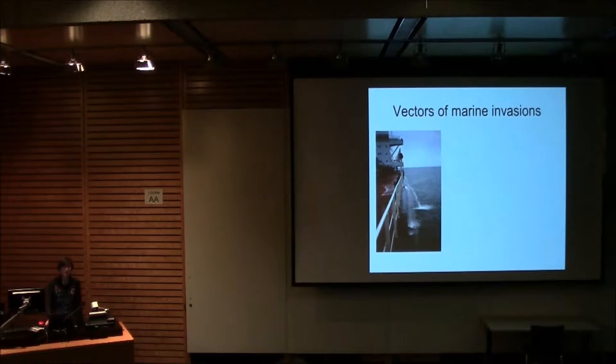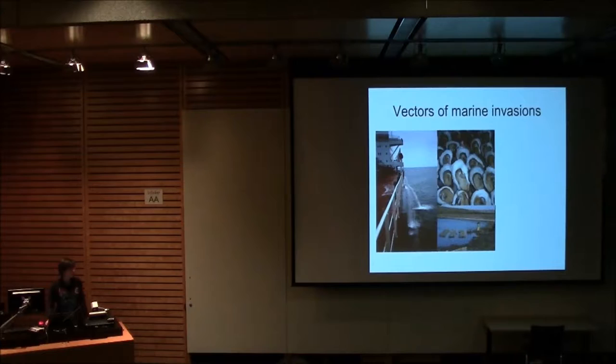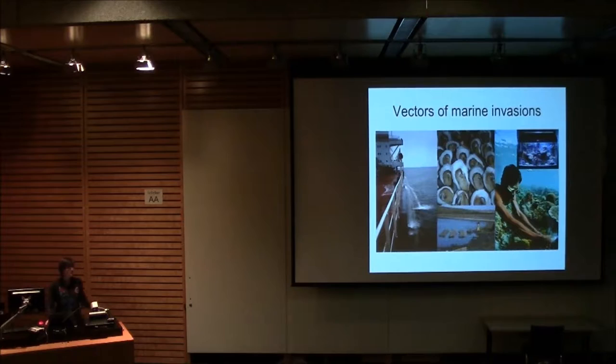Marine invasions are started by three typical vectors. Invaders are introduced through ballast water. They're also introduced by aquaculture, coming in or hitchhiking on the back of things like oysters, which is one of the main vectors in aquaculture. But the vector that is of interest to us today is the aquarium trade. This is how lionfish got transported from the Indo-Pacific to the Atlantic.